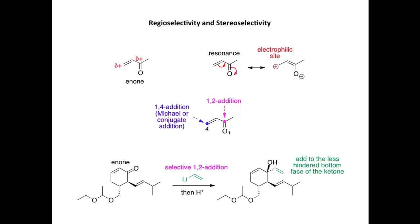Let's look at this example where we have a starting material bearing an enone functional group reacting with vinyllithium. The vinyllithium attacks directly at the C=O double bond, so we get 1,2-addition — no attack at the 1,4 position. On 1,2-addition, we take our electrons onto the carbon and then onto the oxygen. Following protonation we form this tertiary alcohol. This is described as a regioselective addition reaction because the organometallic attacks at the 2-position and not the 4-position.